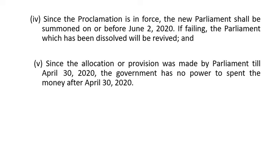The fourth argument is that since the proclamation is in force, the new Parliament shall be summoned only before June 2, 2020 — because Parliament was dissolved on March 2nd, meaning three months expires June 2nd. If it fails, the Parliament which has been dissolved will be revived. The fifth argument is that since the allocation of provisions was made by Parliament only until April 30, 2020, the government has no power to spend money after April 30, 2020.